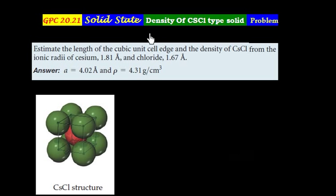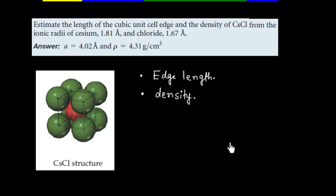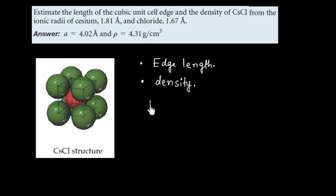This problem is related to the density of a CsCl type solid. We have to calculate two things: the edge length of the cubic unit cell and the density. CsCl follows a BCC lattice, that is body-centered cubic.